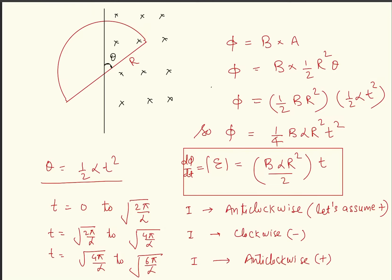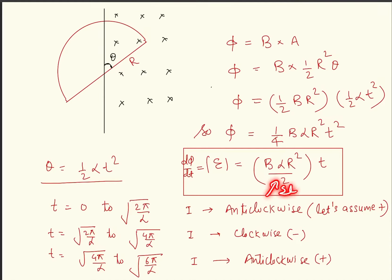So the time for pi rotation goes from 0 to root(2pi/alpha), then from root(2pi/alpha) to root(4pi/alpha) the rotation alternates clockwise and anti-clockwise because the magnetic field is inside. The induced current should oppose the change in flux. Flux is increasing, so the induced current is anti-clockwise — assume anti-clockwise is positive. Then the opposite action gives negative current, then anti-clockwise again gives positive, and so on. The slope of the EMF versus time graph is constant.